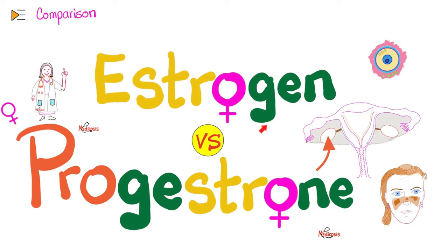Estrogen causes genesis of the estrus cycle — the menstrual cycle, the reproductive cycle in animals — versus progesterone: 'pro' meaning gestation, pregnancy. It's a steroid. Testosterone is also a steroid. Testosterone, progesterone, and estrogen are all steroids — lipid soluble. Click the like button, click the subscribe button, and let's get started.